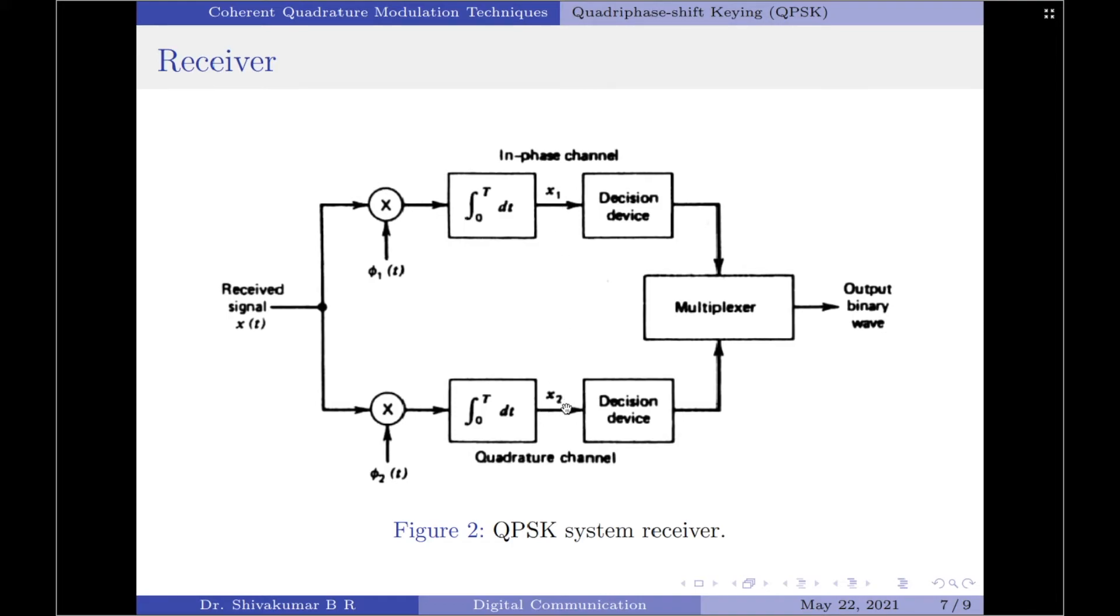Each of these correlator outputs are then compared with a threshold of 0 volts in each branch using a decision device. You should note the threshold is 0 because we have said at the transmitter the input binary sequence is represented in its polar form. So the average value of a signal represented in its polar form is 0, and that is why the threshold will be 0.